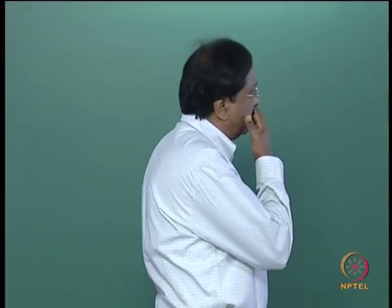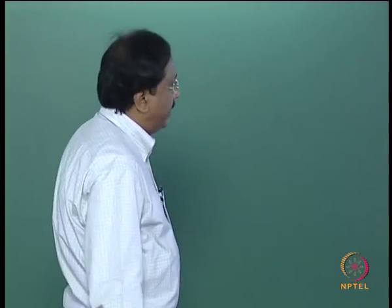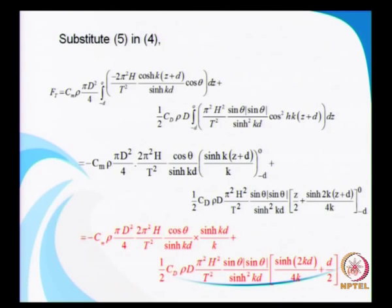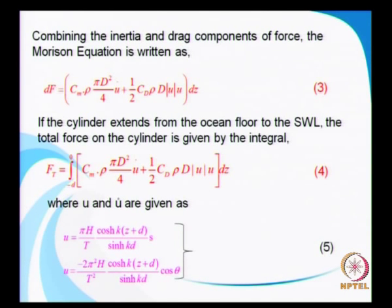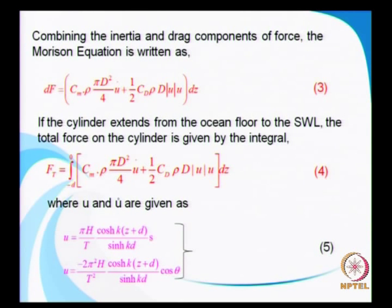Today we will again see the expression for the total force. As per the Morrison equation, we have already seen that the total force can be represented as the summation of drag force on an elemental height or area, elemental height given by dz, and u and u-dot are defined by the linear theory.